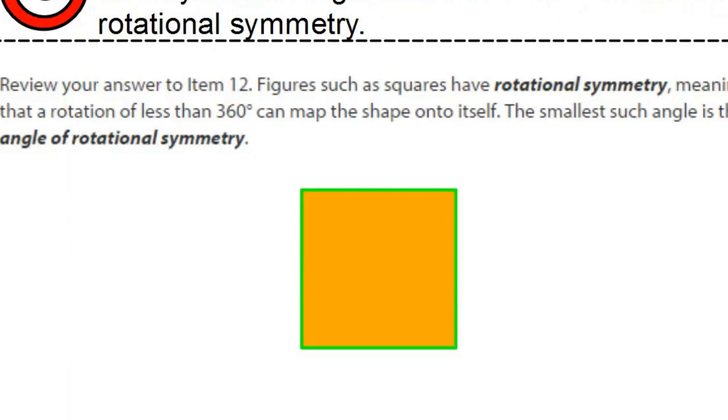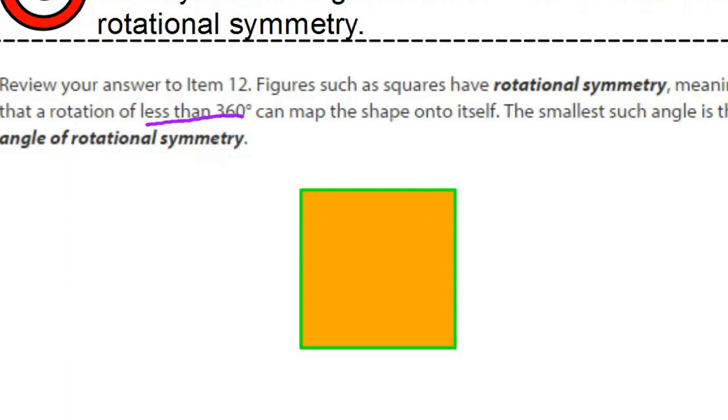Notice that in this definition we do say that the rotation has to be less than 360 degrees, because every shape would have rotational symmetry if we allowed the rotation to be 360 degrees, because every shape can be turned completely around to look like it did when it started.